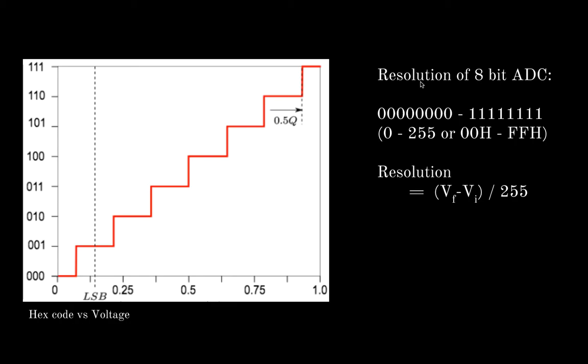Here I have shown the calculation of resolution of 8-bit ADC. The digital format of the 8-bit would go from 8 zeros to 8 ones, which is 0 to 255 or the hex code from 00 to FF. So the resolution would be the highest voltage minus the lowest voltage provided divided by 255, which are the number of digital points we have here. So the resolution is the width of this.